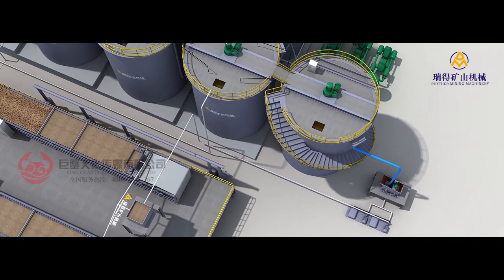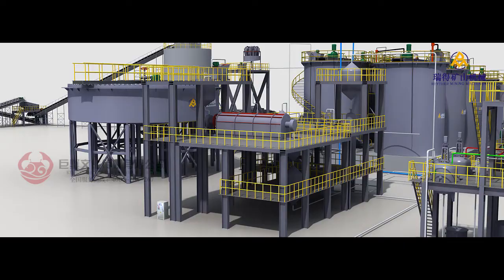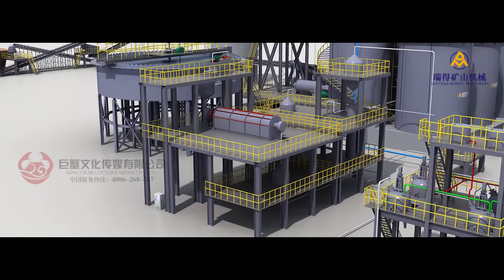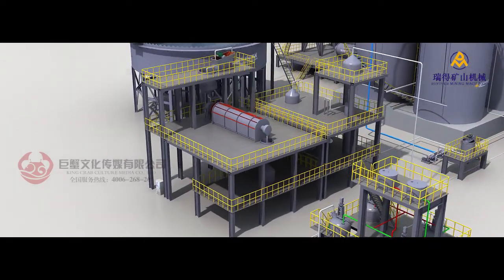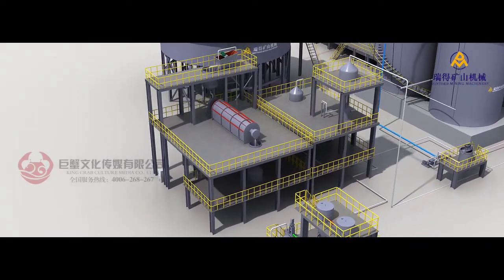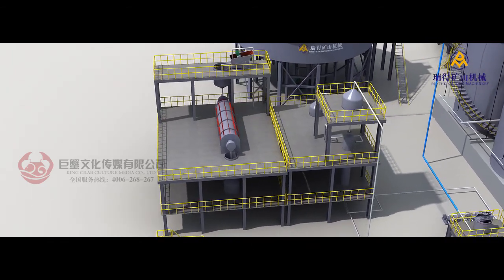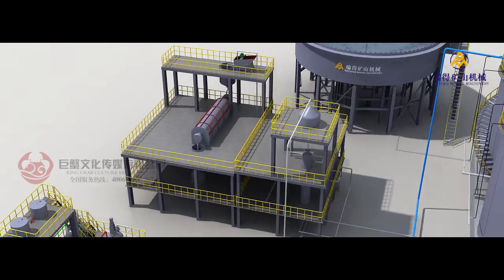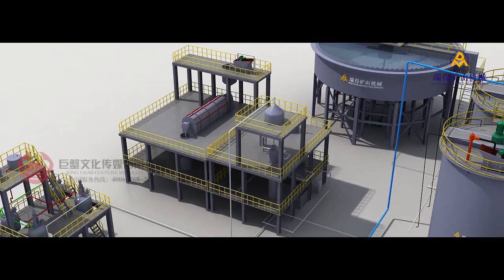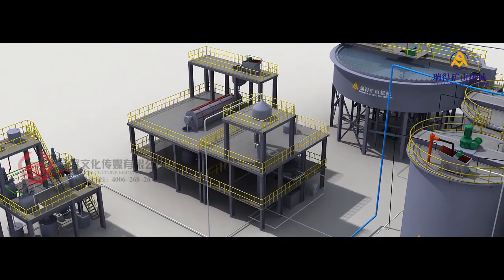The complete set of high temperature and high pressure desorption and electro-winning equipment has adopted liquid level control system, temperature control system, and automatic control system. If the grade of gold loaded carbon reaches 3000 g/t, the desorption rate can be over 96%.